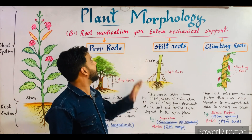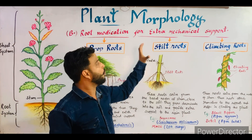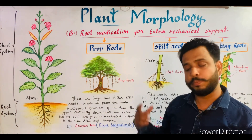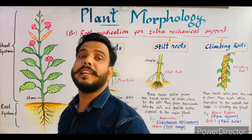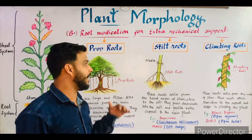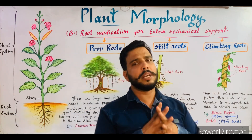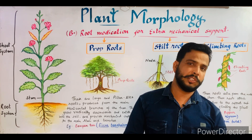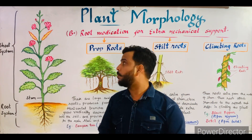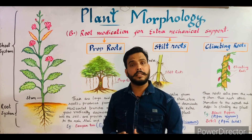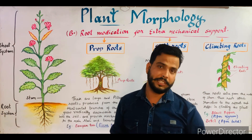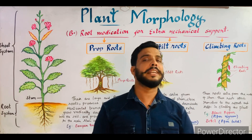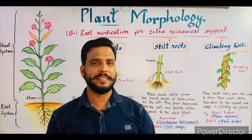So that was all about root modification for extra mechanical support. I told you about three types of roots: prop roots, stilt roots, and climbing roots. I think all the things are very clear to you. If you want to ask any type of question related to this topic, you may ask in the comment section. In my next video, I will tell you about the third category, that is root modification for vital activities. Thanks for watching, have a good day.